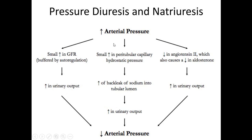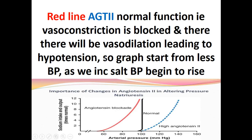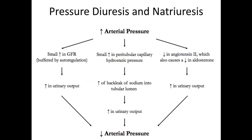The second mechanism: whenever arterial pressure rises, it increases pressure in the peritubular capillary network. This pressure increase causes a back leak of sodium into the lumen, meaning sodium will come back into the lumen and be lost in the urine, increasing urinary output and decreasing blood pressure.